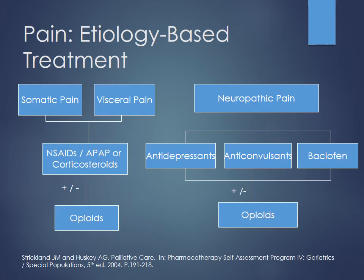For somatic and visceral nociceptive pain, dealing with inflammation is a major component — using NSAIDs, acetaminophen, or corticosteroids, plus opioids if needed. For neuropathic pain, the treatment pathway is different — you'll use antidepressants, anticonvulsants, muscle relaxers like baclofen, and potentially opioids as well. Those are the main differences in how we treat these types of pain, and we'll discuss them in more detail going forward.